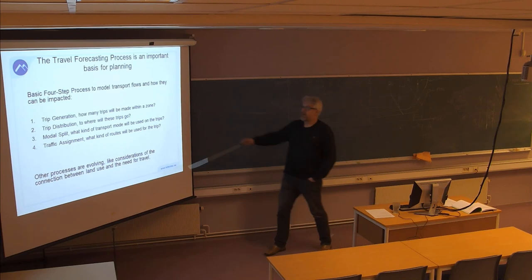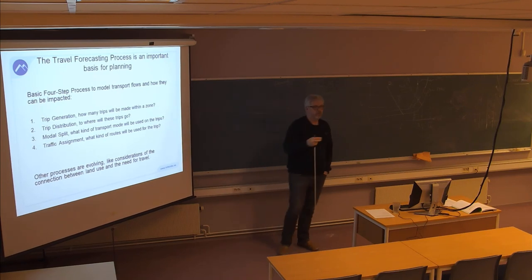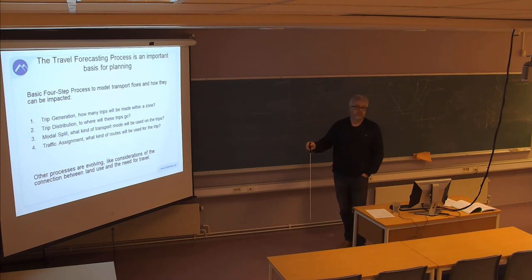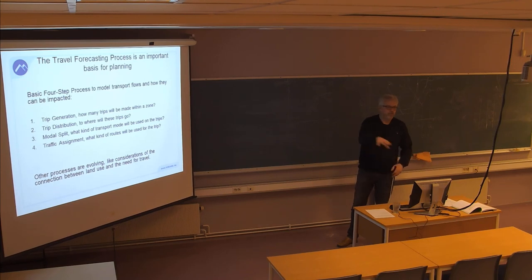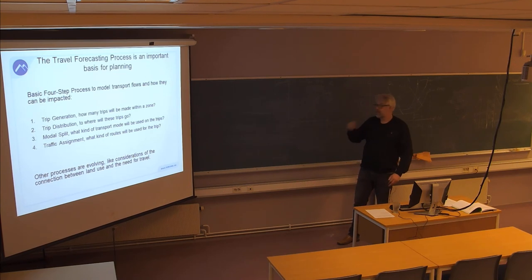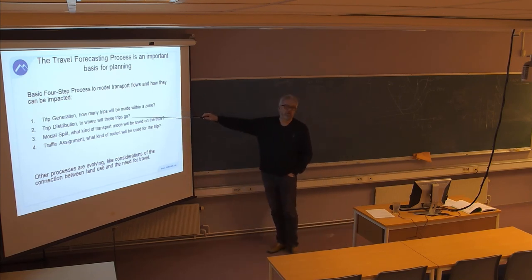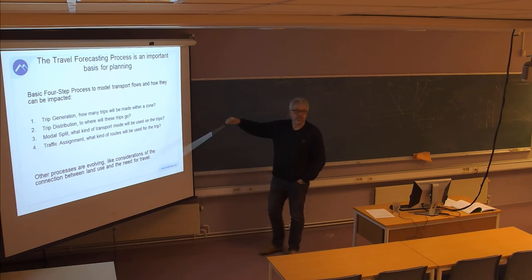The next step is to determine where these trips will go — the origin-destination pattern. That is also modeled based on the characteristics of adjacent zones. We know where the shops are, which can be determined from national bureau of statistics data. So we have a basis for modeling where trips will go. This is where the transport system comes into consideration, because it is also a question of transport costs.